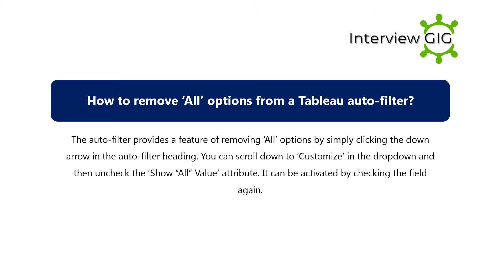How to remove all options from a Tableau autofilter: The autofilter provides a feature of removing all options by simply clicking the down arrow in the autofilter heading. You can scroll down to customize in the dropdown, and then uncheck the 'Show All Value' attribute.